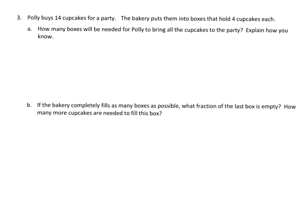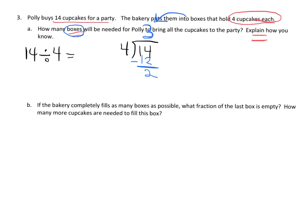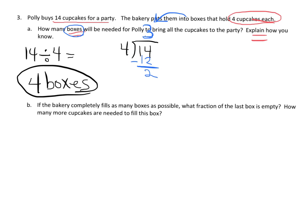A couple of ways we could do this — we could do 14 divided by 4. So 14 divided by 4: 4 goes into 14 three times, that's 12 with 2 left over. So what's the big question? How many boxes will Polly need? We know we need 3 whole boxes, but this remainder of 2 means we've got 2 cupcakes left over. So really we're going to need 4 boxes.